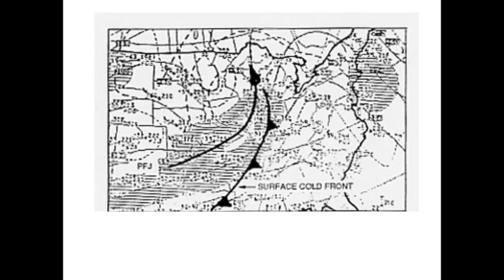This shows the jet stream orientation in relation to a cold front. The dark solid line with the triangles is your surface cold front and the black arrow shows the orientation of the jet stream winds. Notice how the black arrow behind the cold front is more parallel to it. In this case, the strongest winds at mid- and upper levels of the atmosphere are blowing parallel to the surface cold front, which indicates a slow-moving active cold front.